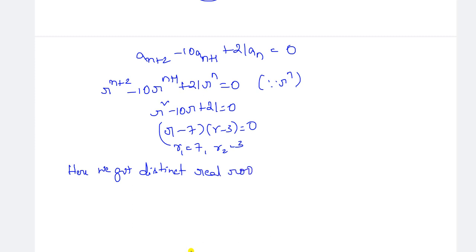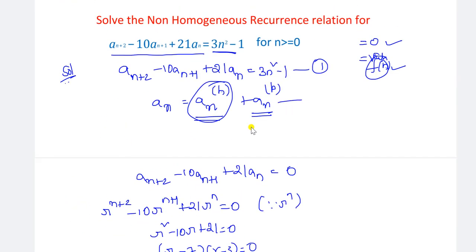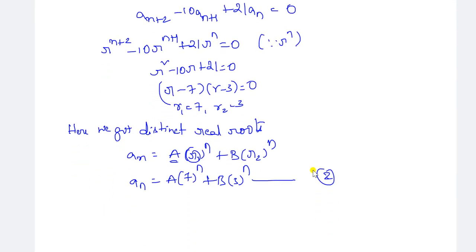For distinct real roots, the solution is: An equals A·R1^n plus B·R2^n. Therefore An^(h) equals A·7^n plus B·3^n. This is our second equation. Let us call this the homogeneous part — we need to combine An^(h) and An^(p).